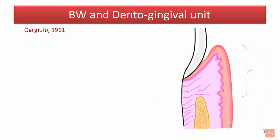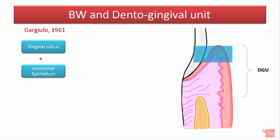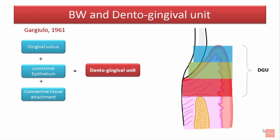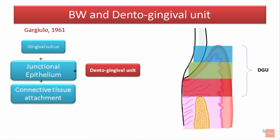Gargiulo in 1961, in a cadaveric study, estimated the histologic dimensions of the dento-gingival unit. It comprises the gingival sulcus, the junctional epithelium extending from the base of the gingival sulcus apically, and the connective tissue attachment extending from the base of the junctional epithelium to the crest of the alveolar bone. Together they form the dento-gingival unit. However, the junctional epithelium and connective tissue attachment together form a functional unit called the biological width.